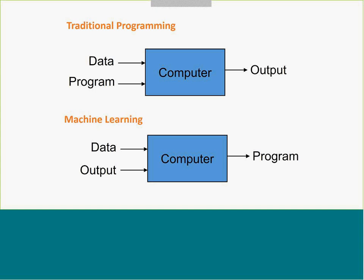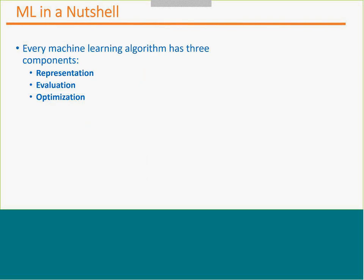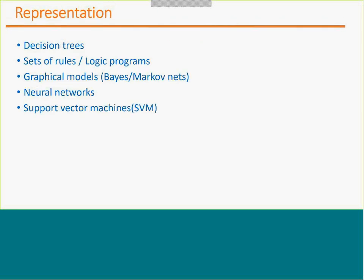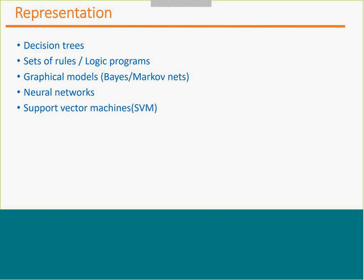In machine learning, the output is actually the program. We discussed that machine learning has 3 different components: the first one is representation, the second is evaluation, and the third is optimization. Representation is basically done using decision trees, Bayes, Markov nets, neural networks, and SVM. During the last session we didn't go into what decision trees, SVM, and other things are, but today we are going to cover all these things, so you will be aware how representation is done using machine learning.